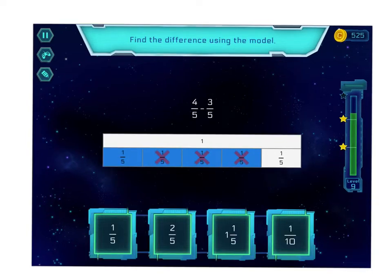Alright, now this one they did the cross off for us. They had 4/5 in blue and they crossed off 3/5 and they want to know what's left. Well there's just that one piece left, so that's 1/5 left.